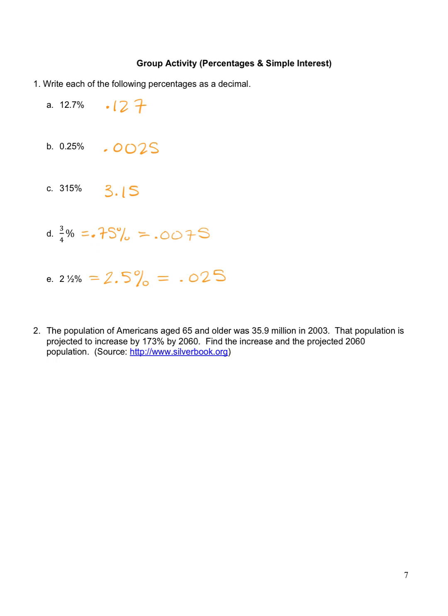Number two, the population of Americans age 65 and older was 35.9 million in 2003. That population is projected to increase by 173% by 2060. Find the increase and the projected population in 2060.